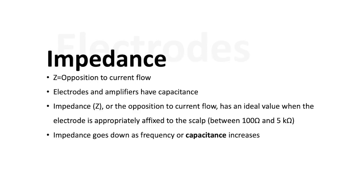Electrodes have a property termed impedance. It is represented by the letter Z and signifies the opposition to current flow. Electrodes as well as amplifiers have a property of capacitance. Impedance has an ideal value when the electrode is appropriately fixed to the scalp and that value is between 100 ohms and 5 kilo ohms. This is very important to obtain a reliable signal. Of note, impedance goes down as frequency or capacitance increases. This will come into play later when we talk a bit more about filtering.